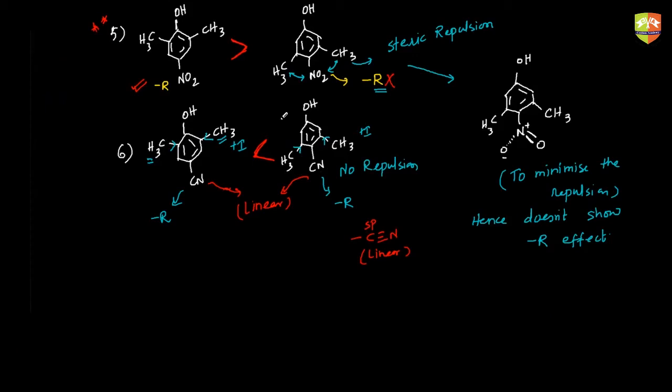Like this, they ask questions on the acidic order of phenols, which is important. Apart from this, there are two or three preparation method reactions of phenol that are not very important. But there are certain name reactions in this chapter that are important: the Reimer-Tiemann reaction, the cumene-phenol process, and the Claisen rearrangement. We will see those reactions in the next session. Thank you.